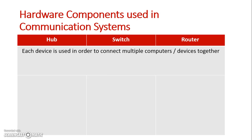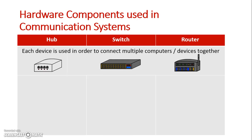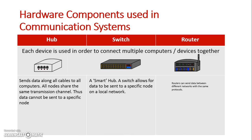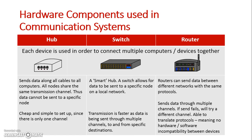To summarize: each device is used to connect multiple computers and devices together. The hub gives a basic setup that sends data between devices, but all devices receive the same data on each port. Switches are independent and can send specific data down specific lines to specific destinations. Routers go beyond the local network and can send data to specific nodes on other networks through internet technologies.